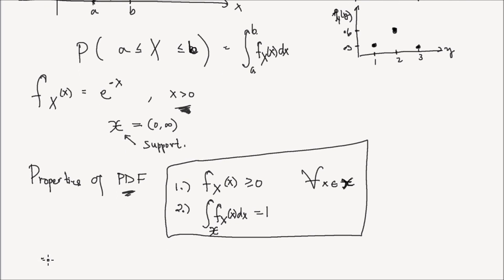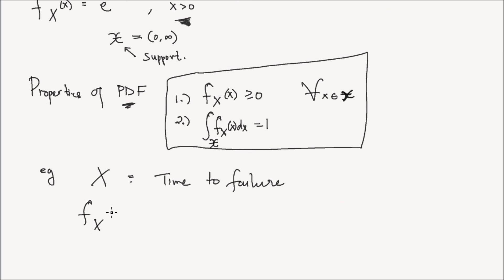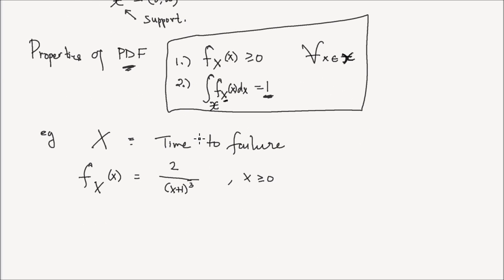Let's look at an example. Say I have a random variable x which is the time to failure in hours of a lightbulb. I have a probability density function f of x which describes the probabilistic property of that random variable x. That PDF is equal to 2 over (x plus 1) to the power of 3, for all values of x greater than or equal to 0. The support of this random variable x is the interval from 0 to infinity. Now, what I want to know is: is this a valid PDF? If it's valid, it should satisfy conditions 1 and 2.